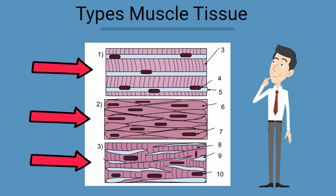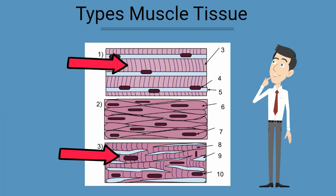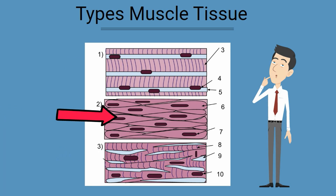Cardiac and skeletal are striated muscles because these muscles have regularly repeated stripes which are formed by proteins called myofilaments, which cause these stripes in the muscles. You can see these stripes of myofilaments in the pictures. Smooth muscles do not have this arrangement of myofilaments.